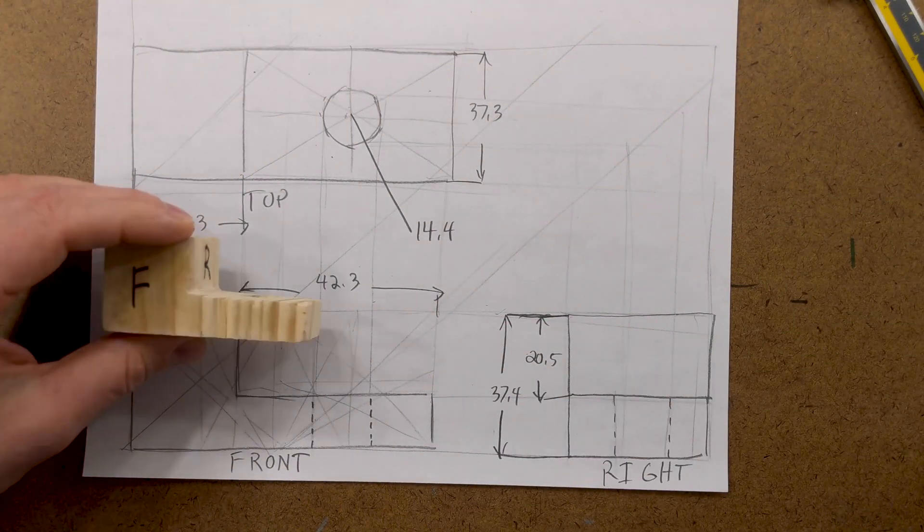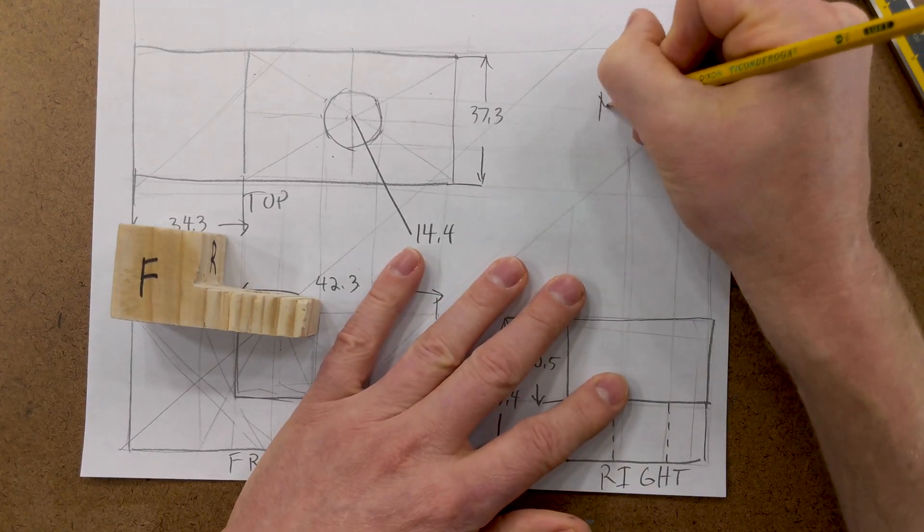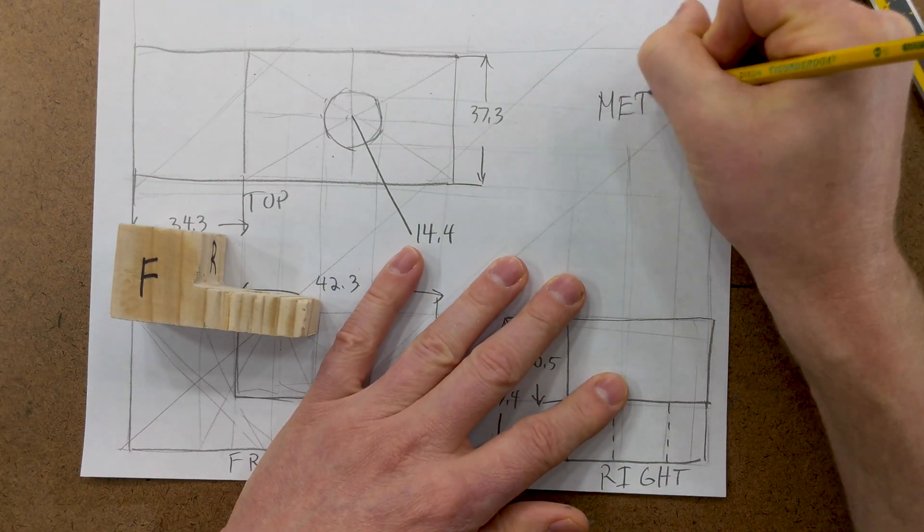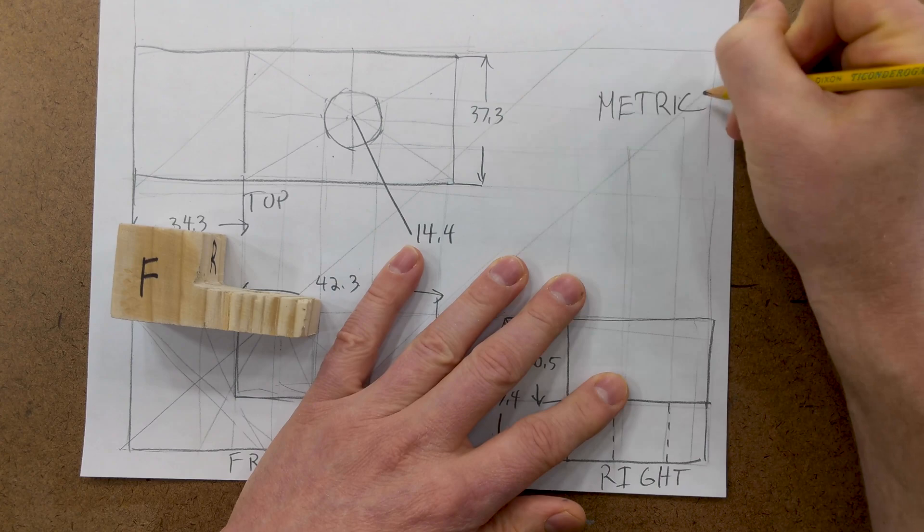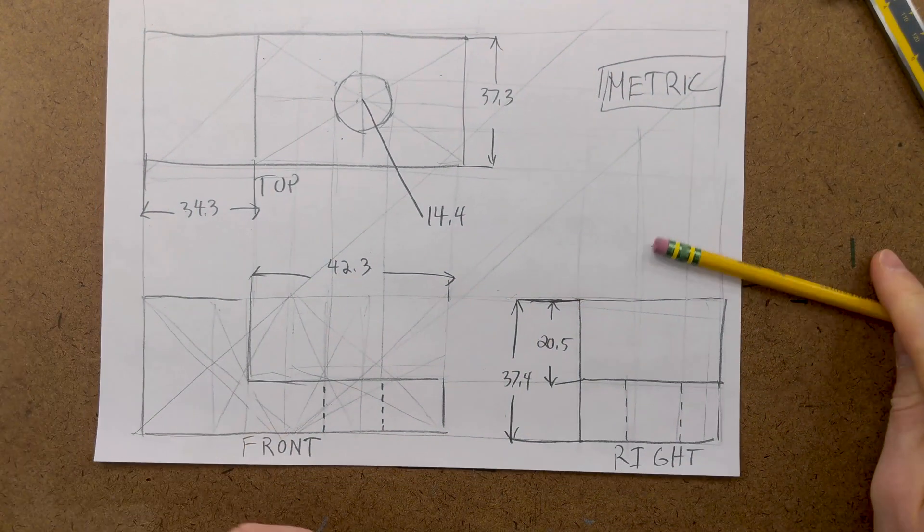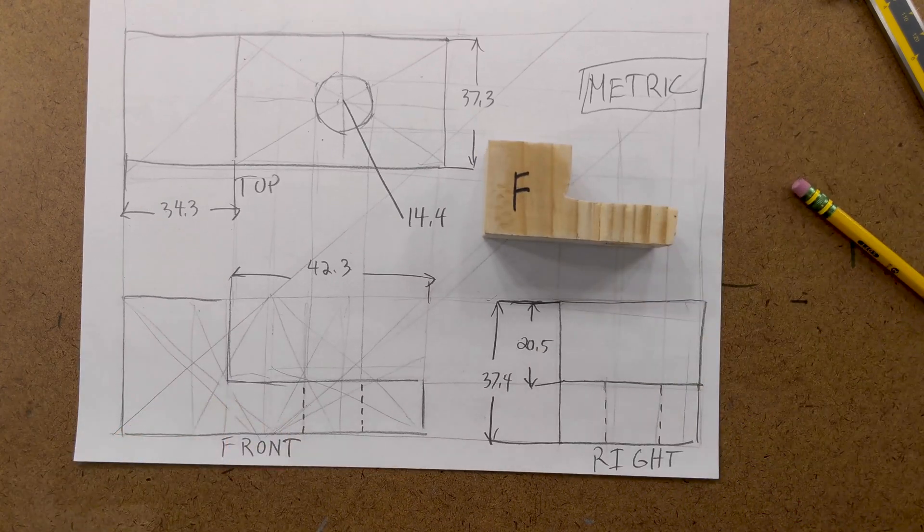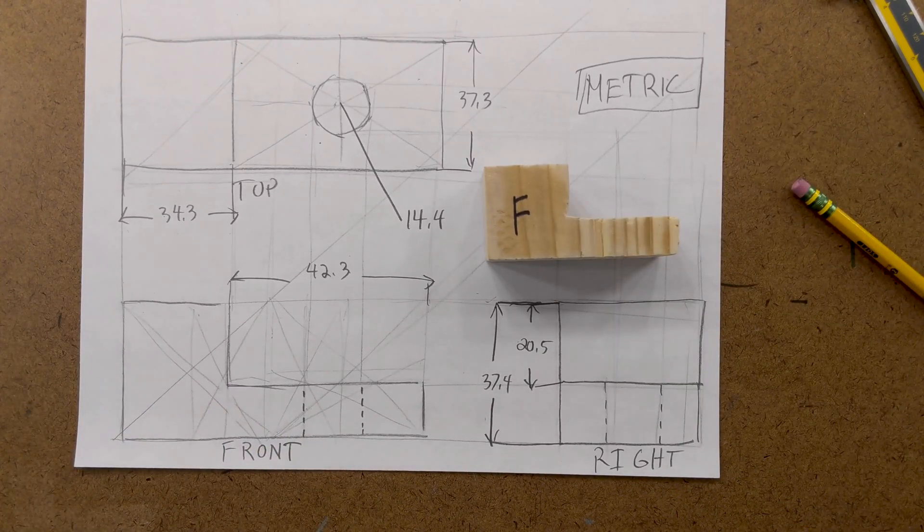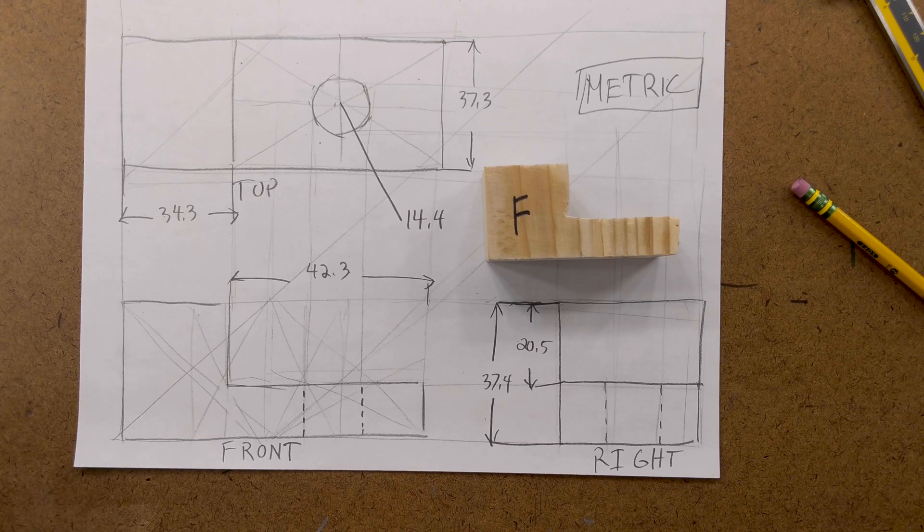Notice that we don't have any units, that's fine. We can just write metric. Assume that everything is millimeters. And now we have, very quickly, a third angle projection with dimensions of this object that can be used to manufacture and machine it.